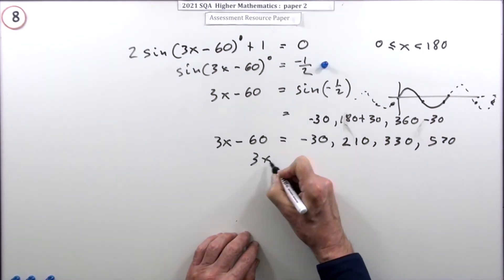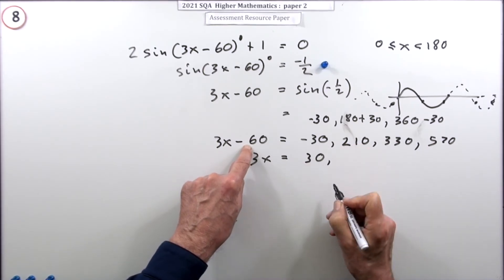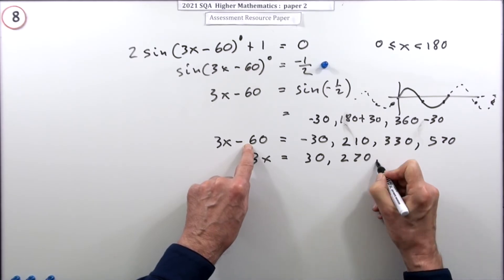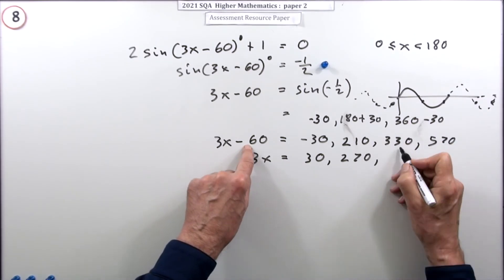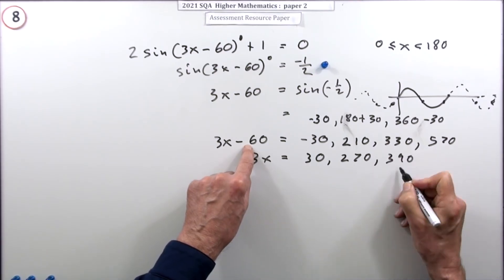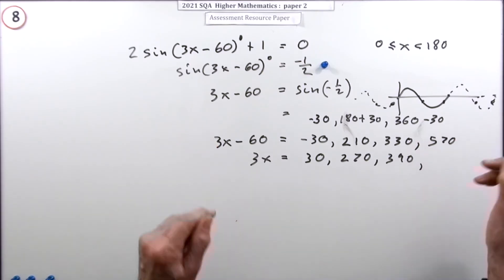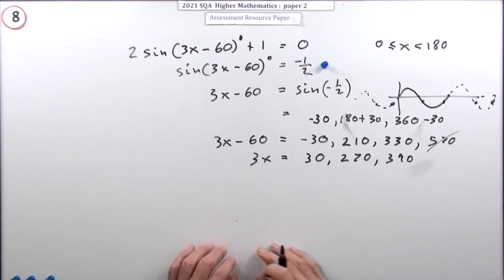Add 60 onto them all, so 3x will be: add on 60, you see that bumps up to 30, comes into range now. 60 onto that, that goes to 270 - looks too big but I'm going to divide it by three so that's fine. 60 onto that, 390 - that stays in range. But 60 onto that, that goes over 600, that's no use so that one goes out.